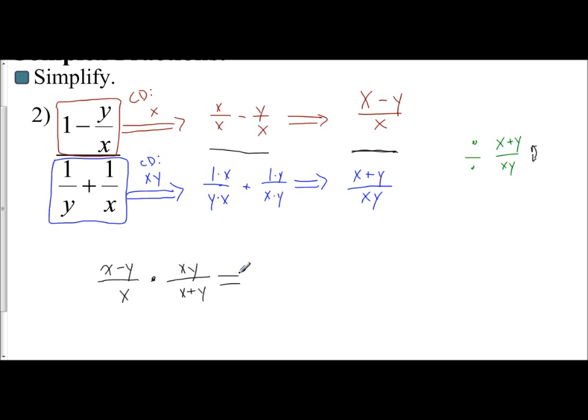And then I just multiply. I have x, y times x minus y goes into parentheses. I have x times x plus y. And I look, can anything be simplified? Well, there's an x on the factors on the outside on the top and bottom, so I can cross them out. So I'm left with y times x minus y over x plus y. And that is the simplified complex fraction from what we started with to here.